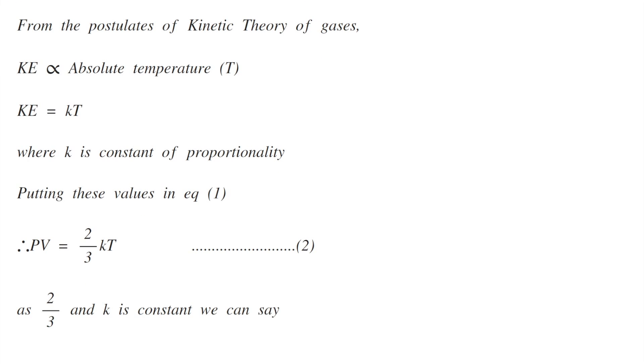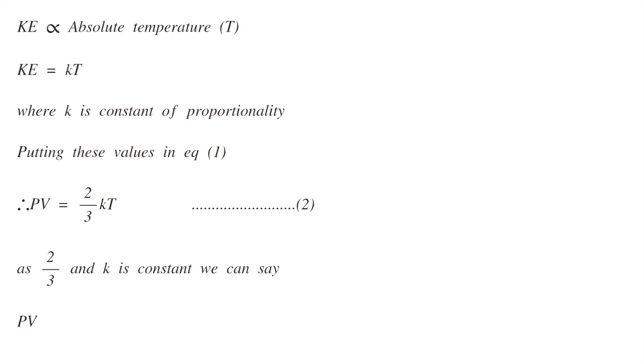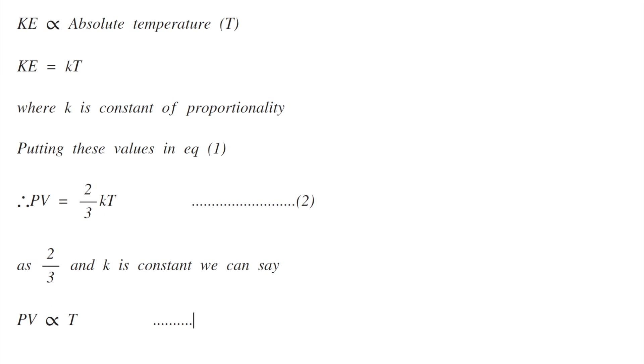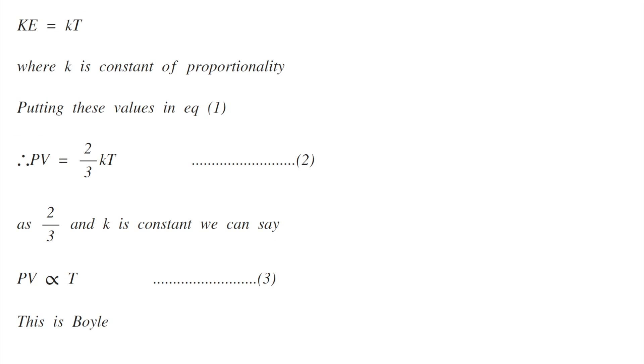As 2/3 and k are constant, we can say PV is proportional to temperature T, and this is Boyle's law.